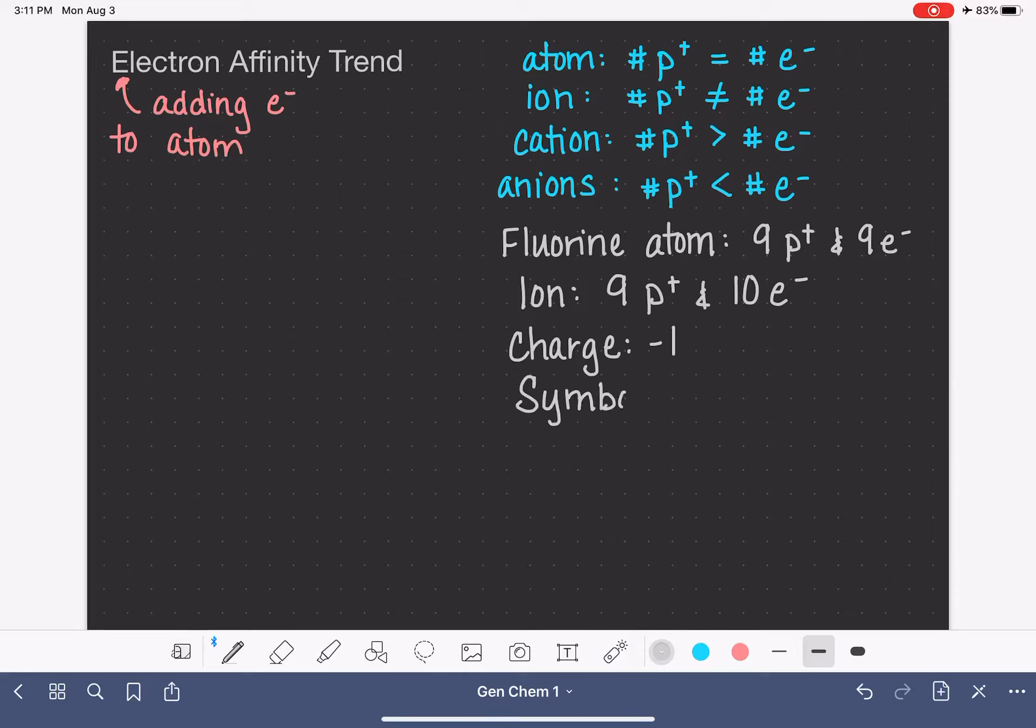In a couple videos ago, I talked about how the symbol for this ion cannot be F. The symbol F represents the fluorine atom. And so much like what we saw in a previous video, the symbol is going to have the charge written in the upper right-hand corner. When the charge is one, one plus or one minus, a lot of times we just write the minus sign or the plus sign instead of writing one plus or one minus.